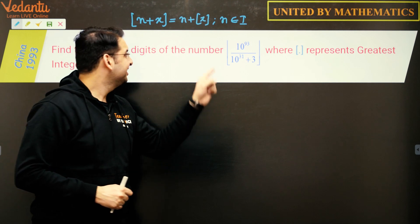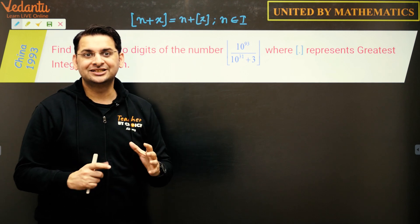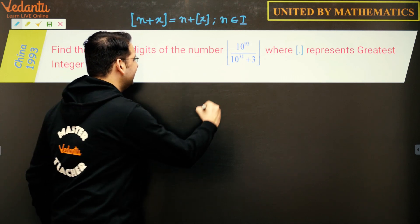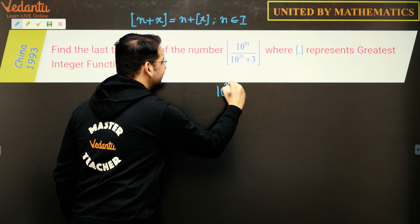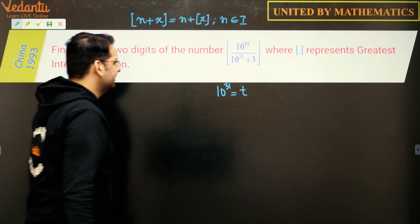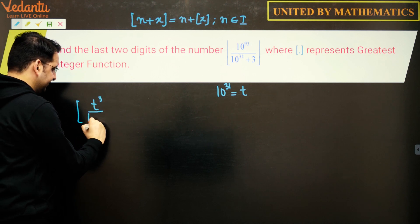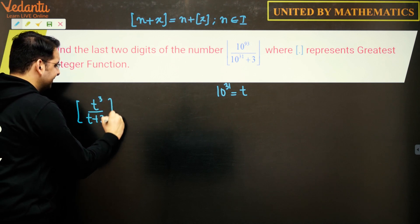Let us do away with that by putting 10 to the power 31 as t. So the question becomes t³ upon t plus 3.